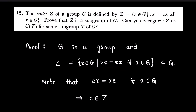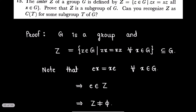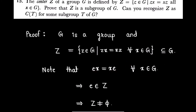To prove Z is a subgroup, we first check whether Z is non-empty. Observe that the identity element e of group G commutes with all other elements of G, and thus by definition the identity element is an element of the center of G. Therefore, the center of group G is always a non-empty set.